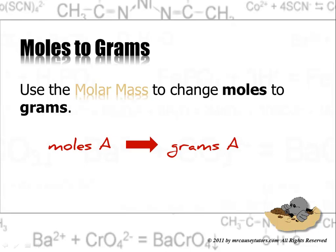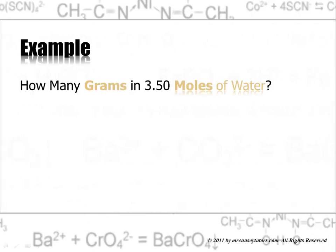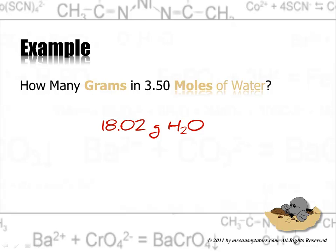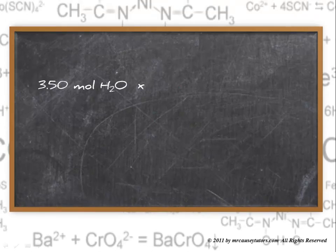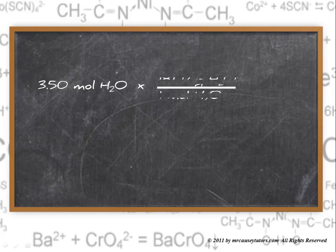Here's an example. How many grams in 3.50 moles of water? Use molar mass. The molar mass of water is 18.02 grams. We did that by adding up all the individual molar masses of the elements involved. Let's go to the board.